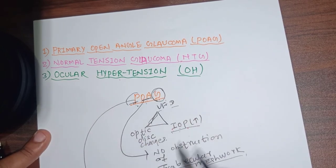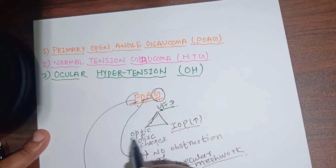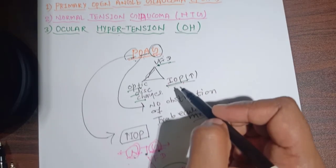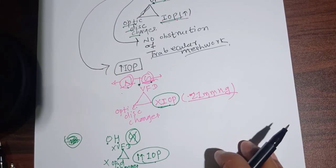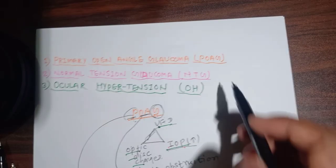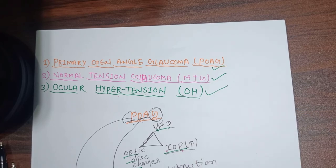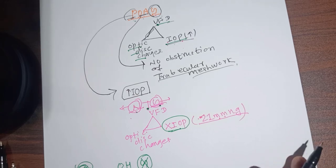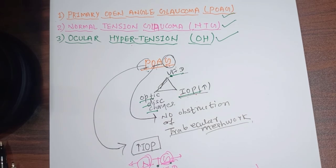In POAG we see visual field defect, optic disc changes, and increased intraocular pressure. By observing these symptoms in the patient, we can differentiate POAG from NTG and from ocular hypertension. This concludes the review of primary open angle glaucoma, normal tension glaucoma, and ocular hypertension.